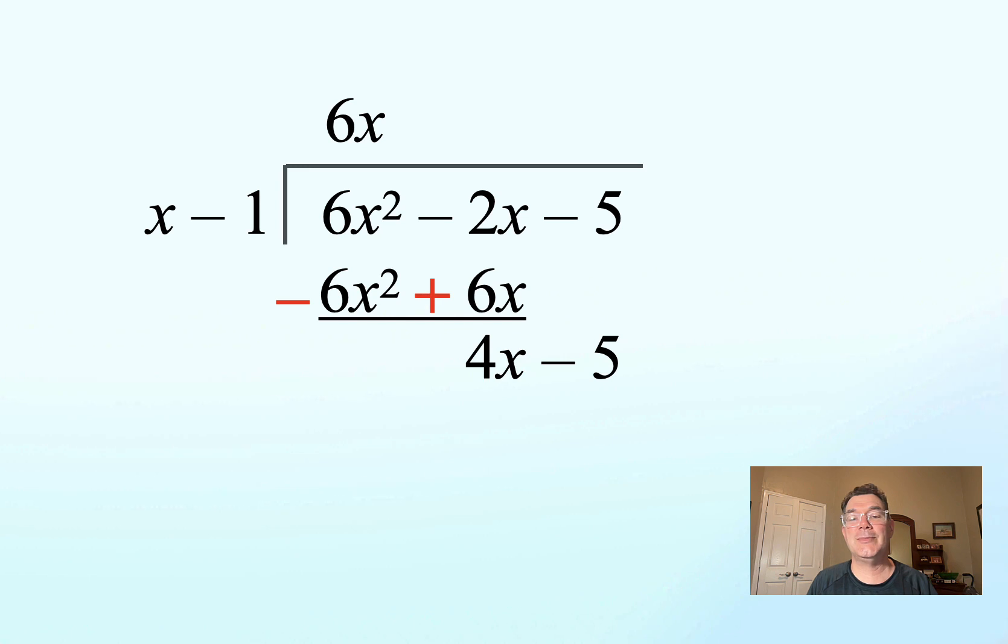And then I do the same thing. I look at x and I look at 4x and I know that x goes into 4x four times. So I write that up top, multiply 4 by the entire divisor and get 4x minus 4. Remember to add the opposite and that will get me minus 1. There are no more terms to divide. So negative 1 is my remainder.